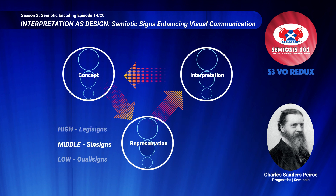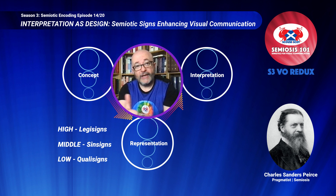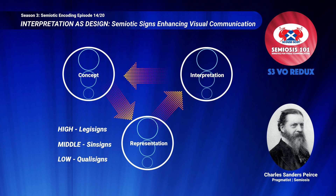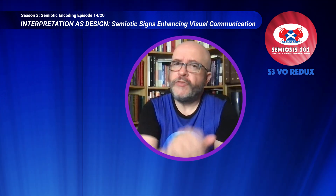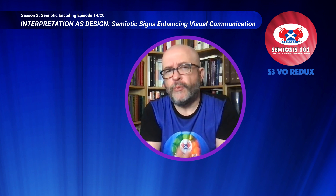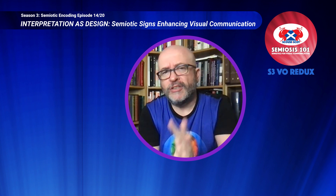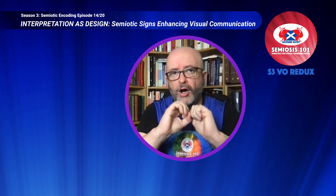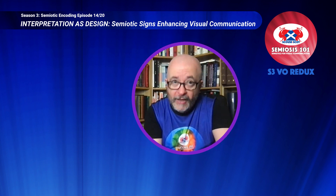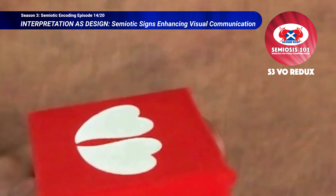A sin sign is a one-off delivery of meaning-bearing. A legisign is more of a generally agreed delivery. Sin as in single, legi as in law. Think on this: quali as in quality, sin as in single, legi as in law. Those of you who are Semiosis 101 regulars will already be aware that semiotic signs are not tangible things but are encoded meaning-bearing. Therefore, in one moment a semiotic sign can be dormant and in the next active.